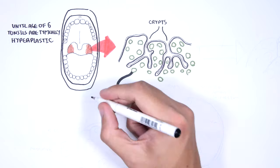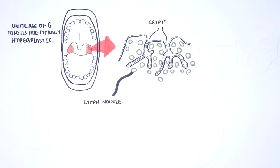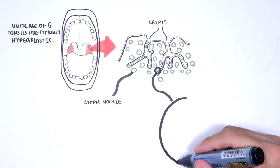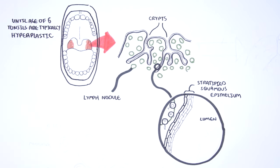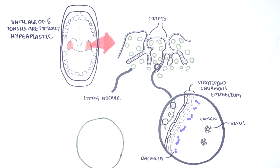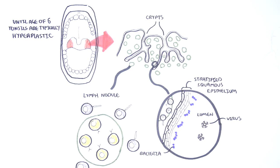The tonsils have deep crypts and lymph nodules. The crypts are normally colonized by many species of bacteria and also exposed to many viral organisms. The lymph nodules contain immune cells such as the T cells, B cells and the macrophages.